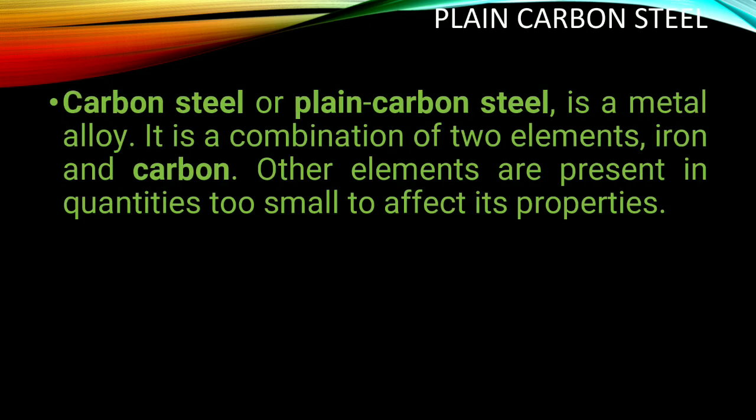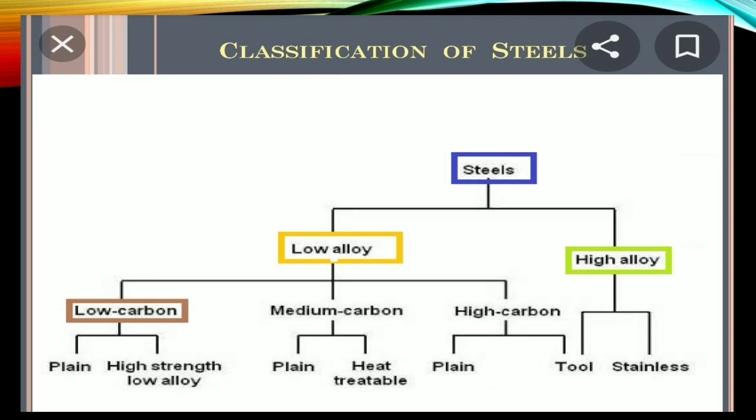Plain carbon steel, or simply steel, is a combination of iron and carbon, with minute impurities of manganese, silica, phosphorus, and sulfur in negligible quantities that do not change any properties. Steel can be classified as alloy steel (low alloy and high alloy) and plain carbon steel — low carbon steel, medium carbon steel, and high carbon steel.